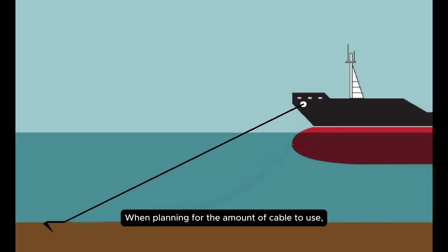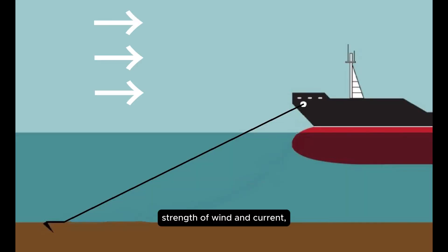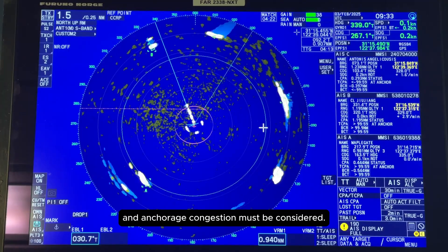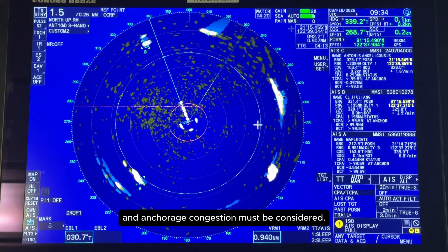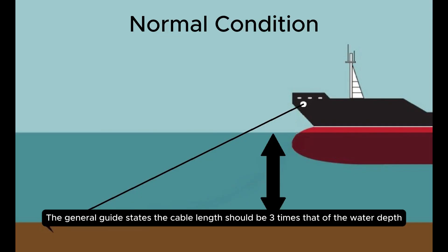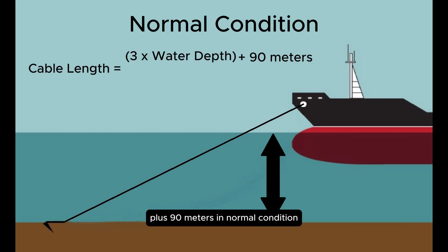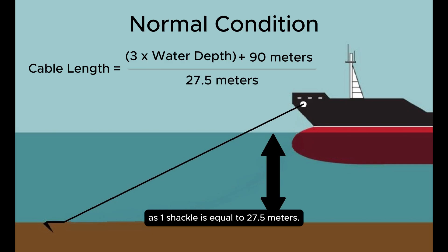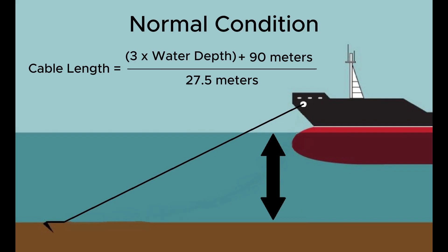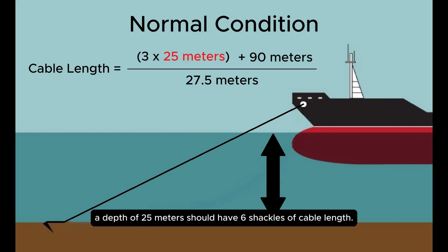When planning for the amount of cable to use, factors like water depth, strength of wind and current, and anchorage congestion must be considered. The general guide states that the cable length should be three times that of the water depth plus 90 meters in normal conditions, dividing the result by 27.5 as one shackle is equal to 27.5 meters. For example, a depth of 25 meters should have six shackles of cable length.